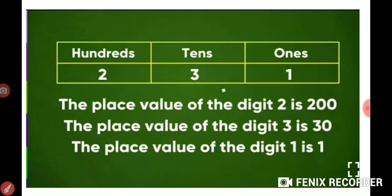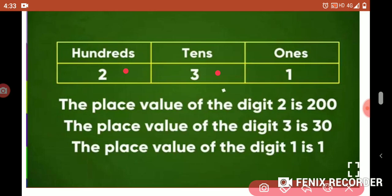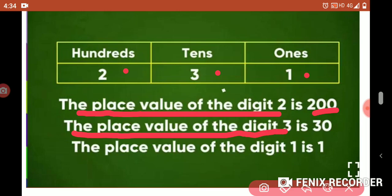Let's take another example. If we take the number 231: 1 is in 1's place, 3 is in 10's place, 2 is in 100's place. The place value of 2 is 200, the place value of 3 is 30, and the place value of 1 is 1.